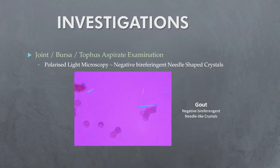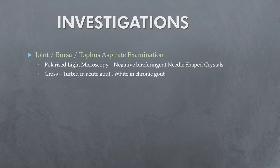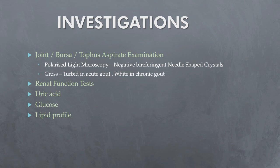In acute gout, the synovial fluid may be turbid due to an elevated neutrophil count. In chronic gout, the appearance is more variable but occasionally the fluid appears white due to the presence of urate crystals. Between attacks, aspiration of an asymptomatic first metatarsophalangeal joint or knee may still reveal crystals. A biochemical screen including renal function, uric acid, glucose, and lipid profile should be performed because of the association with metabolic syndrome. Hyperuricemia is usually present in gout but levels may be normal during an attack. Acute gout is characterized by elevated ESR, C-reactive protein, and neutrophilia, all of which return to baseline as the attack subsides.